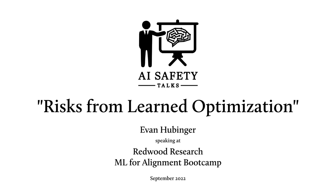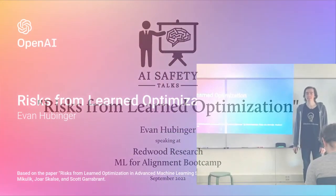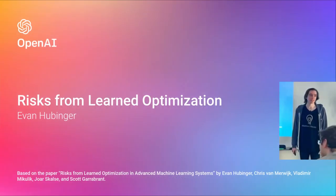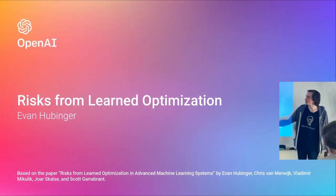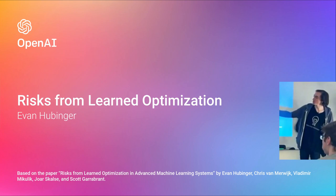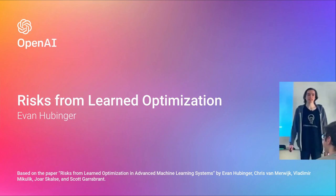Hello everybody. I am Evan Hubinger. I am a research fellow at MIRI. I used to work at OpenAI. I've done a bunch of stuff with Paul Christiano. I also wrote this paper that I'm going to be talking about today.